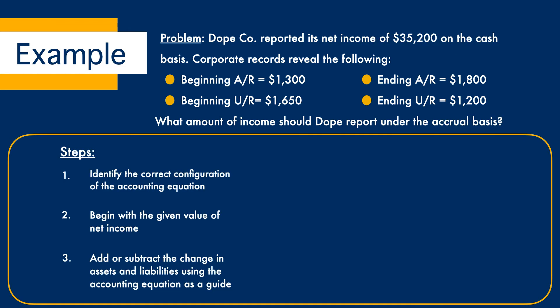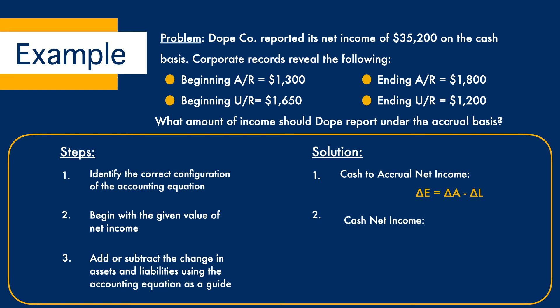Let's start by pulling up the steps involved in the reconciliation process and follow its directions. Step 1: identify the correct configuration of the accounting equation. We know that this is from cash to accrual net income, which means we are going to use delta E equals delta A minus delta L to help us solve this problem. Step 2: begin with the given value of the net income. We have cash net income equaling $35,200.